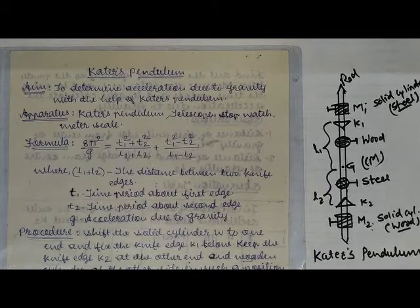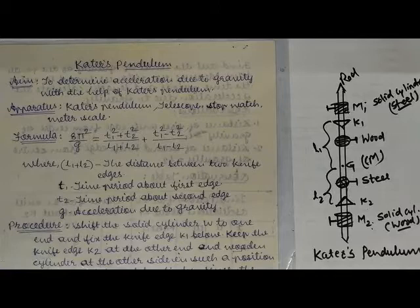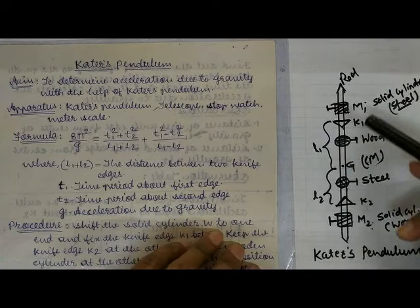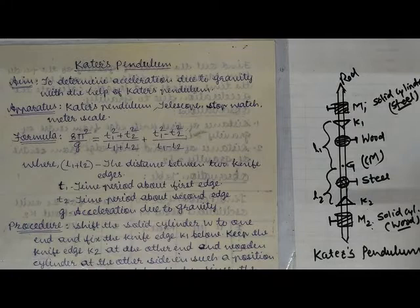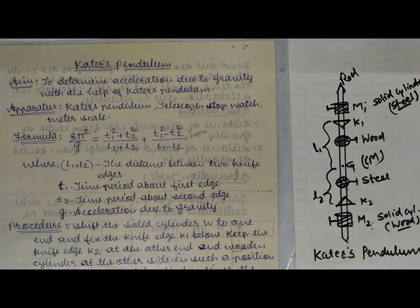Since the distances L1 and L2 will be measured by a meter scale in centimeters, the final answer will be in CGS units — centimeters per second square. Let us now move towards the experimental part to see what actually happens and how to take these readings.